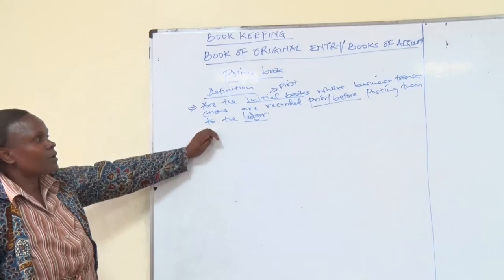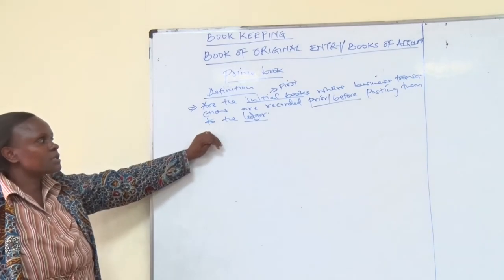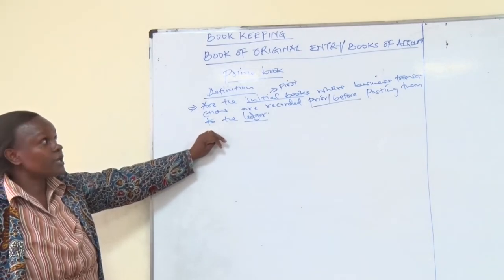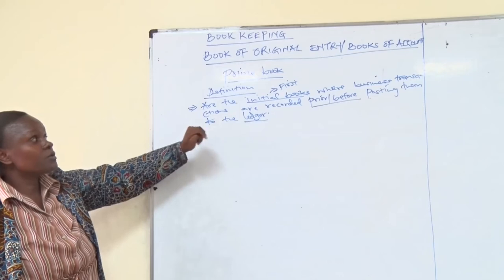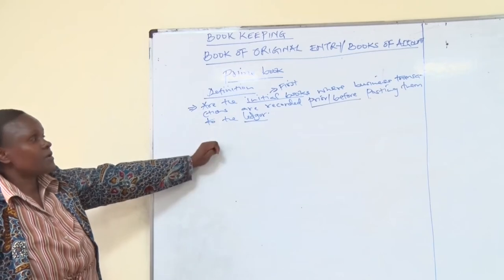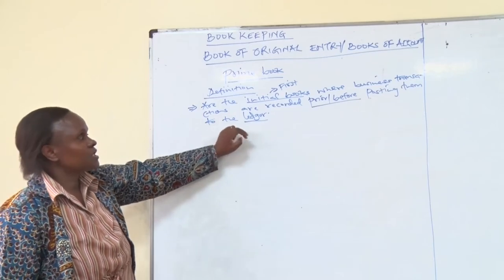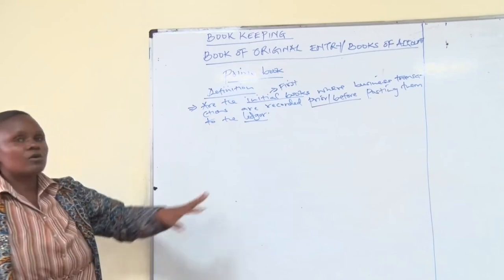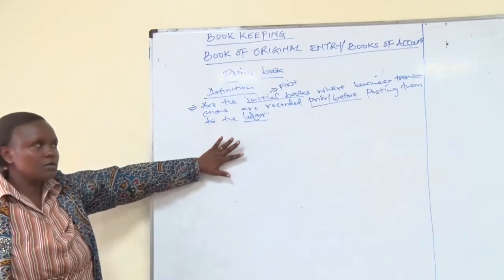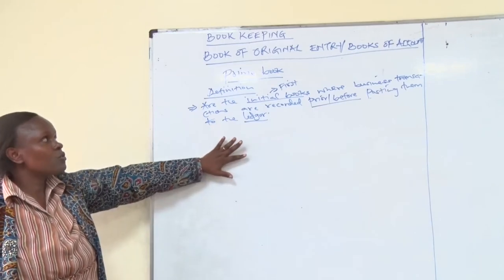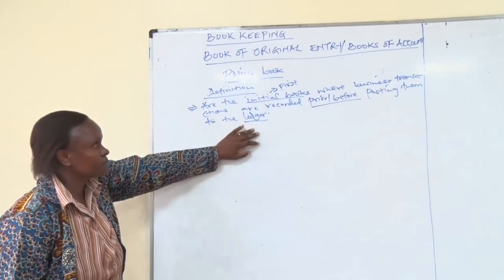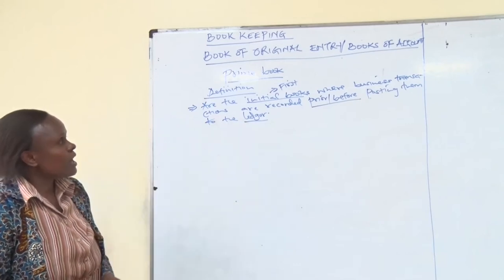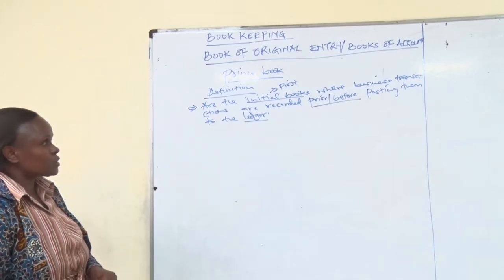As we learn about the accounting process, we say we have the books of original entry, then we go to the ledger. So before you record any transactions in the ledger, first of all you record the transaction in the book of original entry. That's why we call them the first books.